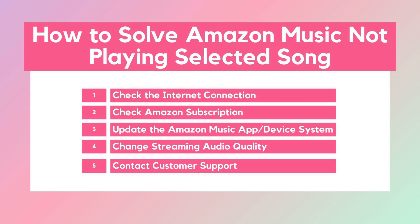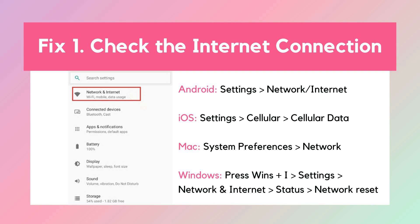If your Amazon Music isn't playing the song you select, here are some solutions to try. Fix 1: Check your internet connection. Make sure your connection is stable. Switch between Wi-Fi and cellular, or reset your network settings if needed.